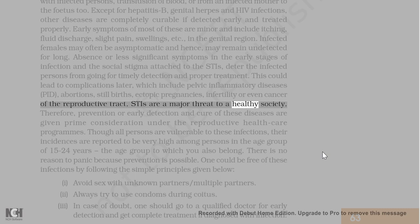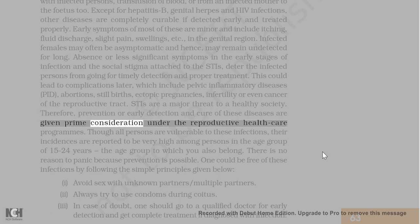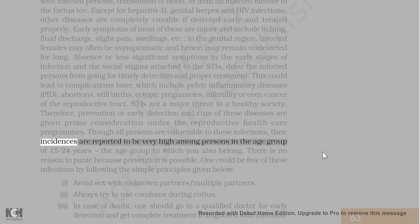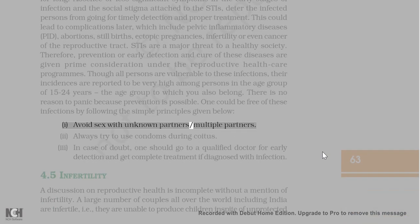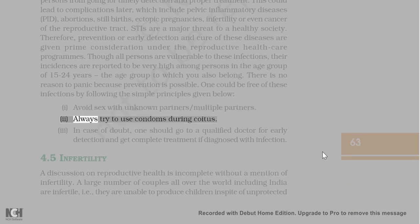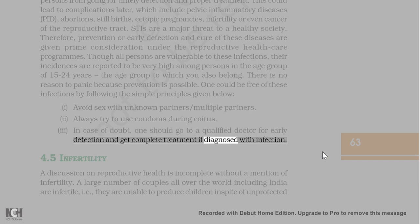STIs are a major threat to a healthy society. Prevention or early detection and cure of these diseases are given prime consideration under reproductive health care programs. Their incidence is reported to be very high among persons in the age group of 15 to 24 years. Prevention is possible by following simple principles: avoid sex with unknown or multiple partners; always use condoms during coitus; and in case of doubt, consult a qualified doctor for early detection and complete treatment if diagnosed with infection.